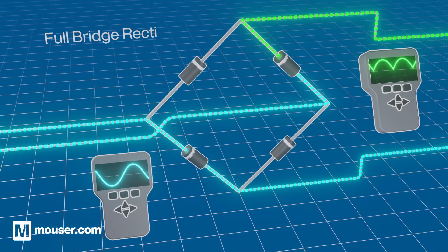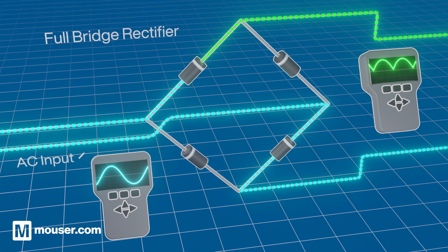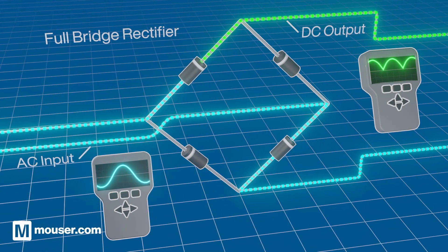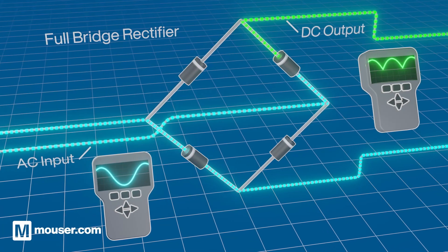Diodes are an essential component. They are used as rectifiers, converting alternating current into direct current, and to protect against reverse voltage in power electronics.